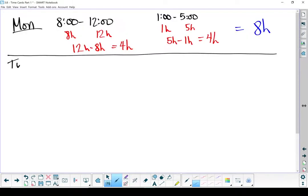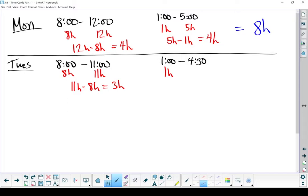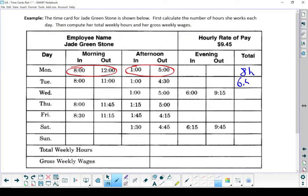Move on to Tuesday. Convert them into a decimal. I've got 8 hours and 11 hours. Take the second one subtracted by the first one, 11 hours minus 8 hours means that Jade worked 3 hours in the morning. Let's do the second one, convert them into decimals. 1 hour, 4 hours and 30 minutes. Well I've got 4 hours and remember 30 minutes is 0.5 hours. Take the second one subtract the first one, 4.5 minus 1 hour equals 3.5 hours. Add those two together, 3 hours plus 3.5 hours give me 6.5 hours. On Tuesday I'm going to put in 6.5 hours.